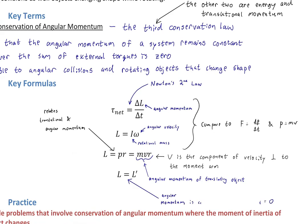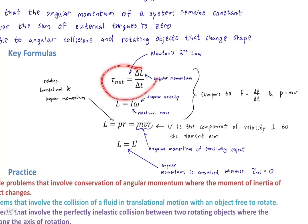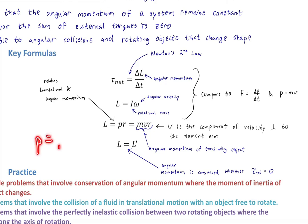What started this whole journey was that angular momentum is conserved — that's mostly why we care about it. The conservation law is simply L = L', just as translational momentum conservation is p = p'. L is the initial angular momentum and L' is the final angular momentum. Angular momentum is conserved whenever the net torque equals zero.